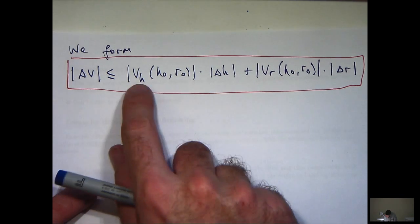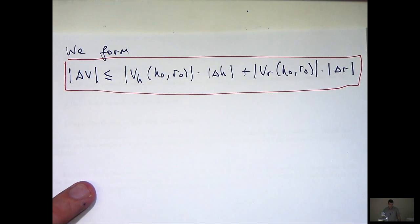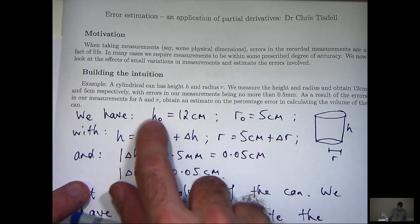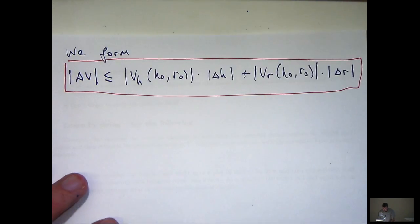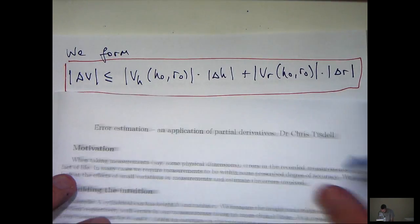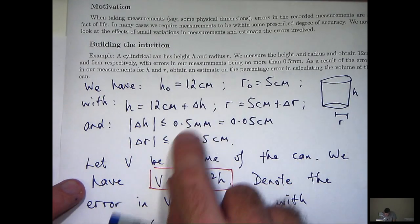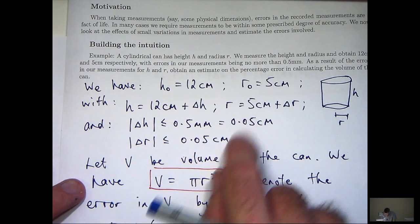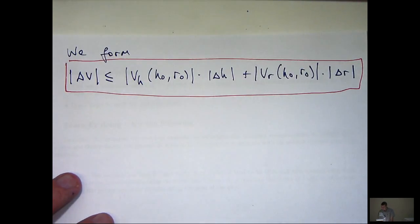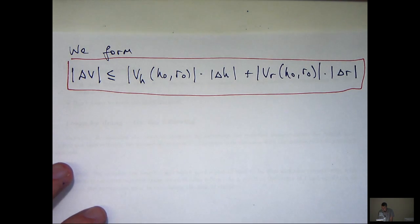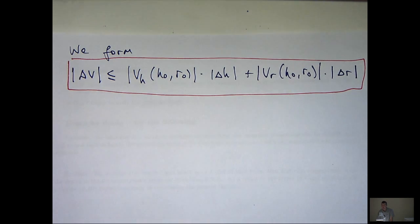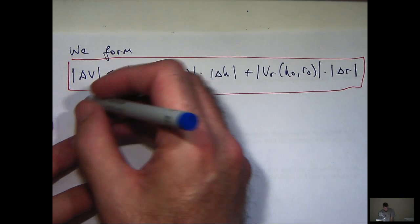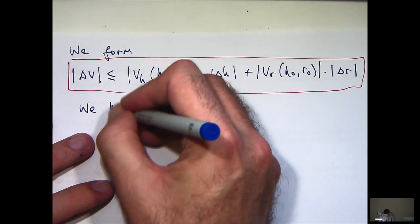Let's calculate these partial derivatives, evaluate them at h0 and r0. Remember, h0 is 12, r0 is 5. And we have an estimate on these guys of 0.05 cm here and here. So we can all use that to our advantage.